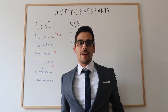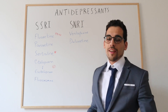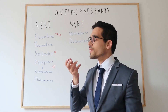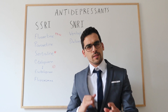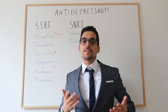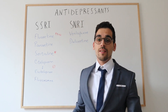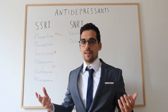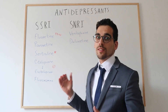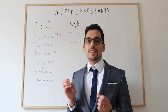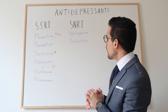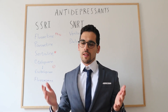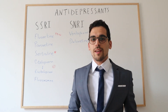Then we have the SNRIs — serotonin and noradrenaline reuptake inhibitors. They will not only inhibit the reuptake of serotonin but also noradrenaline. Serotonin is the happiness neurotransmitter — the one that gives us satisfaction — whilst noradrenaline is the one that gives us strength and activates the body to tackle any situation. This drug class increases both neurotransmitters in the synapse, making it potentially a better antidepressant, though there are some side effects to consider from the increased noradrenaline.